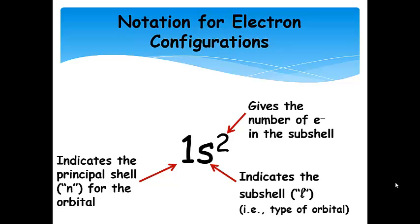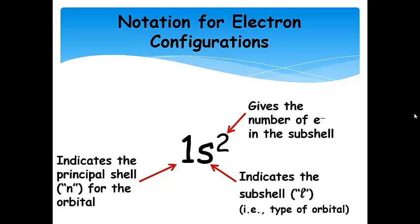To summarize the notation: the number in front of the orbital indicates n, the principal shell; the letter is the orbital type, which is also the subshell — the angular momentum quantum number l, where l equals zero means an s orbital; and the superscript is the number of electrons in that subshell. All electron configurations follow this same pattern regardless of which orbital is being filled.